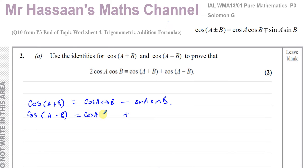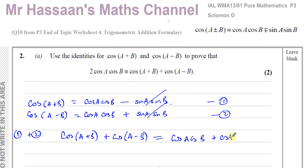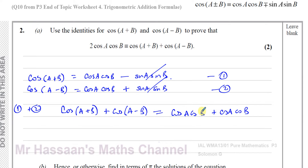So we've written both in expanded form. I'll call these equation 1 and equation 2 and add them together. Adding equation 1 and equation 2 gives cos(A+B) + cos(A−B). The sine terms cancel: minus sinAsinB plus sinAsinB equals zero. We're left with cosAcosB + cosAcosB, which is 2cosAcosB.